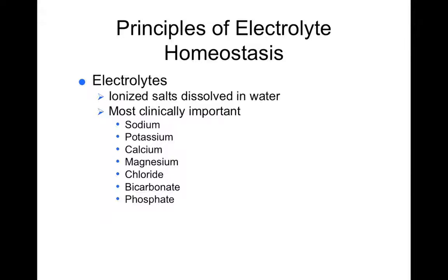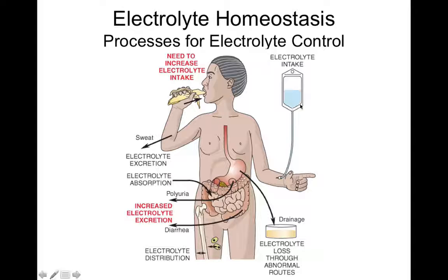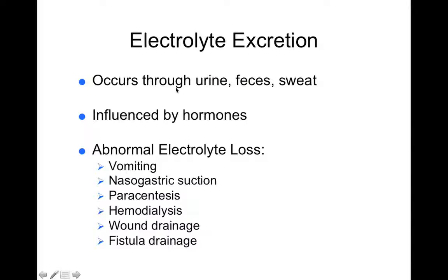Electrolytes are ionized salts dissolved in water — things like sodium, potassium, calcium, magnesium, chloride, bicarbonate, phosphate. They carry a charge — cations and anions — and are all considered electrolytes. You can get electrolytes from food you eat or IV solution, and lose electrolytes through sweat, urine, defecation, or vomiting. Electrolyte balance is influenced by hormones like aldosterone, parathyroid hormone, and calcitonin. Abnormal electrolyte loss can occur through vomiting, nasogastric suction, paracentesis, hemodialysis, wound drainage, and fistula drainage.